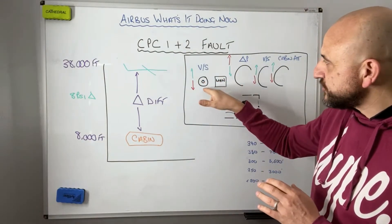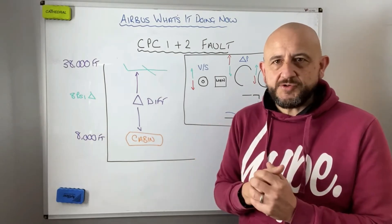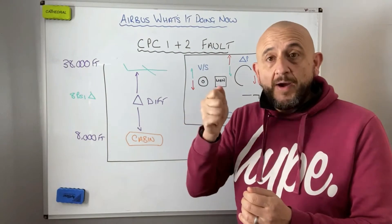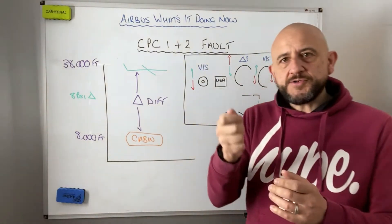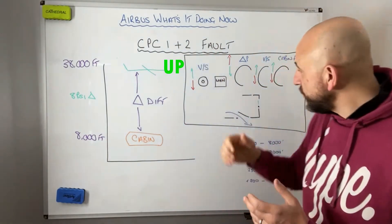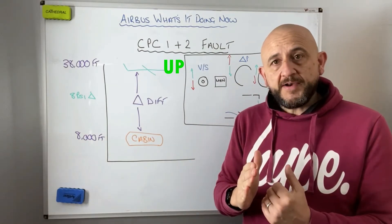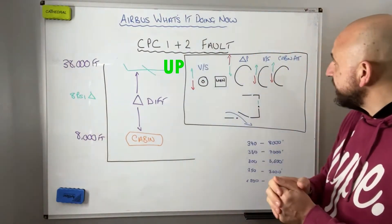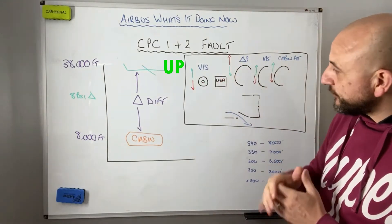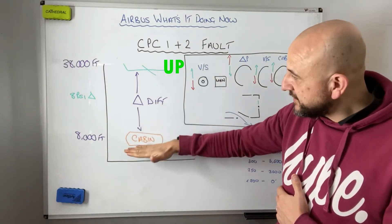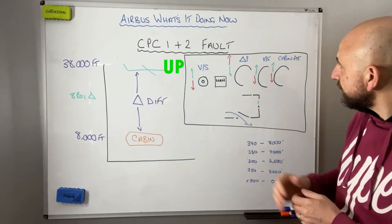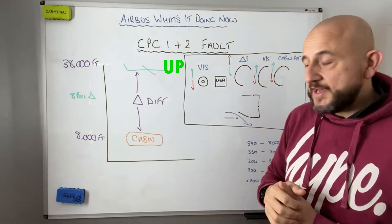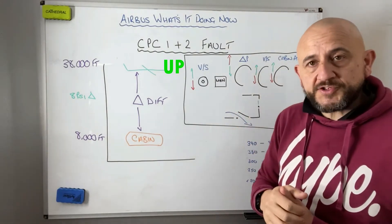The VS switch selection causes some confusion, so let's be clear about what it does. The outflow valve is almost always slightly open — we're just controlling how open it is. Selecting VS up opens the valve a little more, so more air escapes the cabin, causing the cabin to climb. This increases cabin vertical speed, reduces the differential, and increases cabin altitude. You'll also see the outflow valve open slightly.